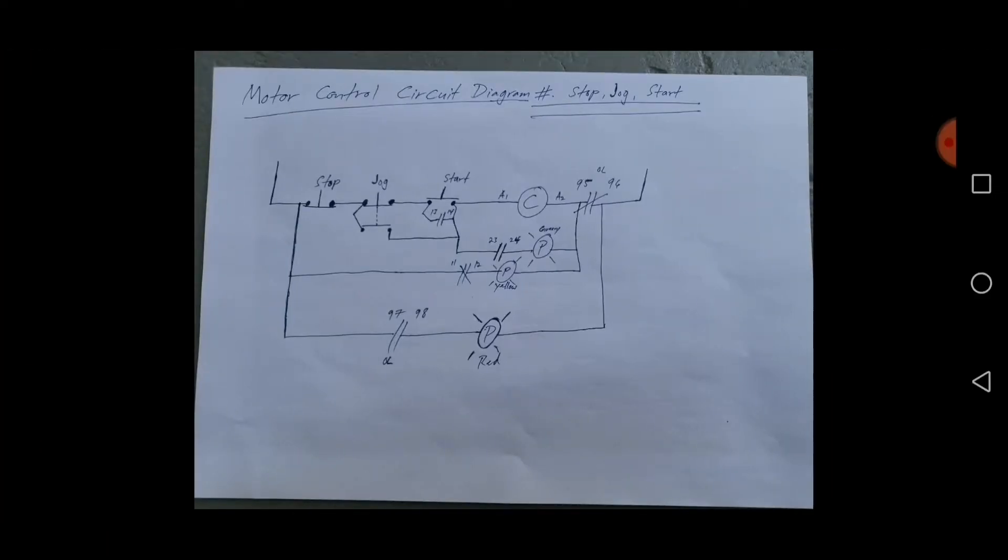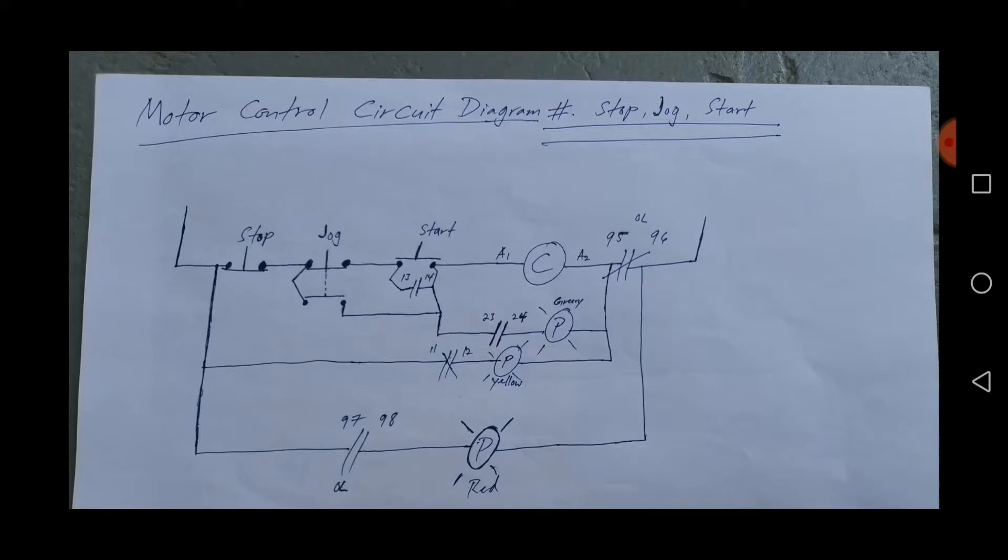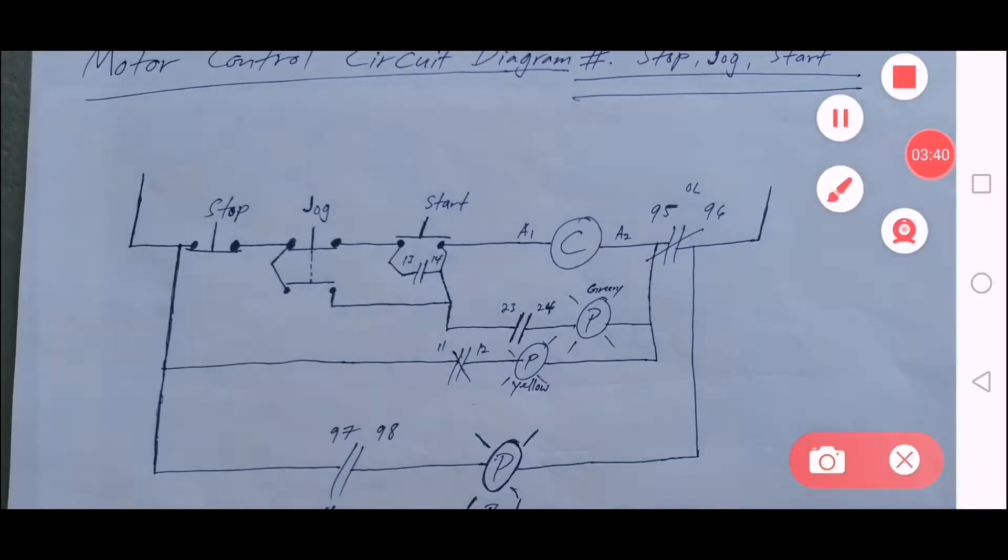Now we'll go to the circuit diagram about this Stop Jog Start. Motor control circuit diagram for Stop Start Jog. So now we'll see here in my copy - we have line 1 and line 2. I only added this jog here. This jog has four terminals: one, two, three, four. These four terminals you can make a connection for our diagram, for our circuit.